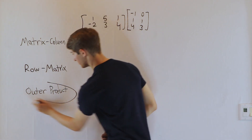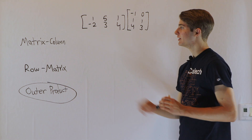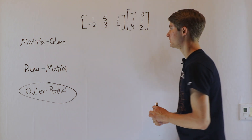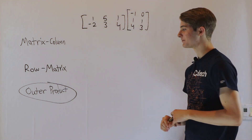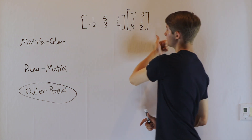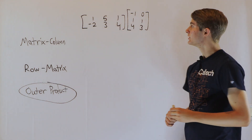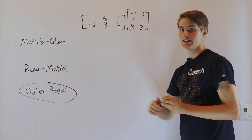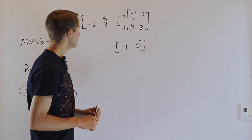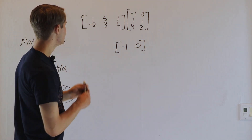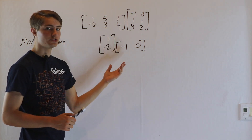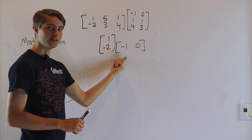Finally we have the outer product expansion of matrix multiplication. The matrix column representation was looking at particular inputs into the right matrix, and the row matrix representation was looking at particular outputs from the left matrix. The outer product expansion is going to look at what's going on in the middle — what's happening when values come out of the right matrix and go into the left matrix. For example, let's look at the x's in the middle. We have two x's coming out of the right matrix: negative 1, 0. For each x input, it's going to correspond to the first column of the left matrix. So to get the result from the x's in the middle, we multiply the first column of the left matrix by the first row of the right matrix.